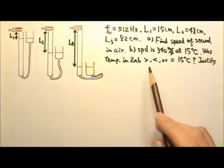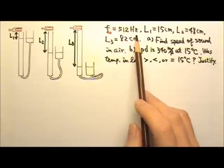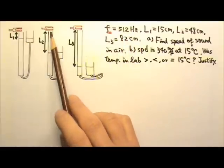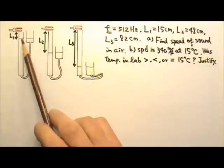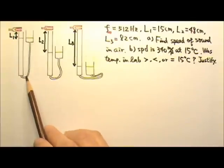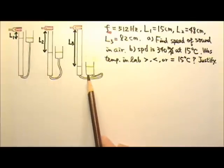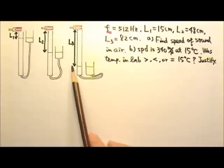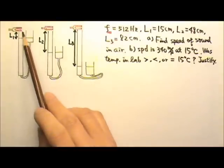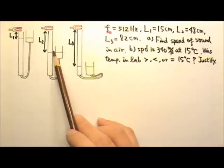Here is our lab problem. A 512 Hz vibrating tuning fork is held just above a pipe. A large water cup connected to the pipe can be raised or lowered to adjust the water level in the pipe, and therefore change the length of air column in the pipe.